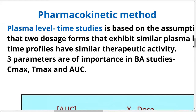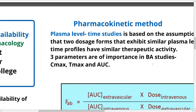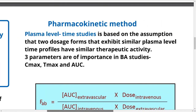The pharmacokinetic method is based on blood studies, or plasma level time studies. The plasma level time study is based on the assumption that two different dosage forms that exhibit similar plasma level time profiles have similar therapeutic activity.